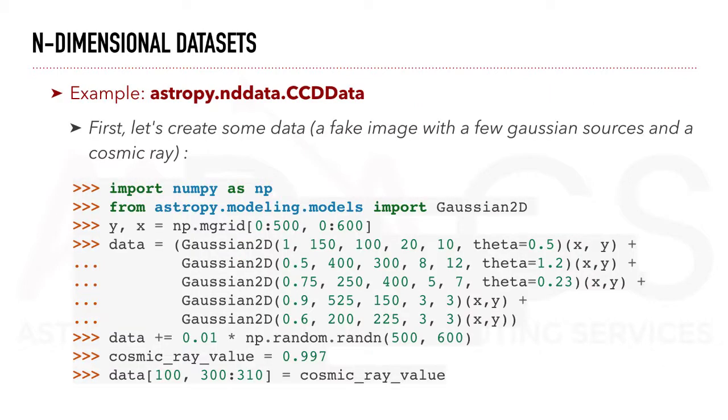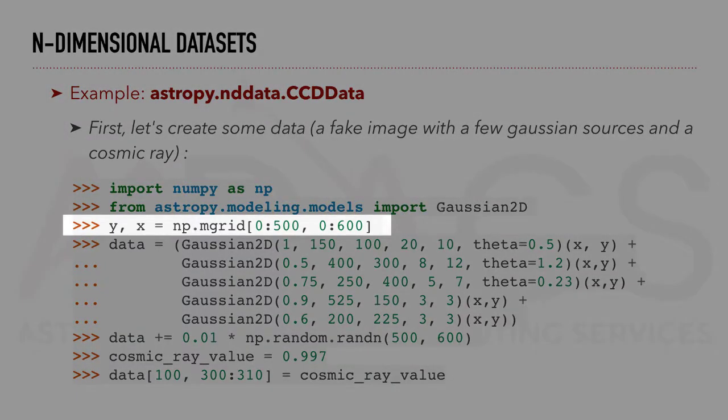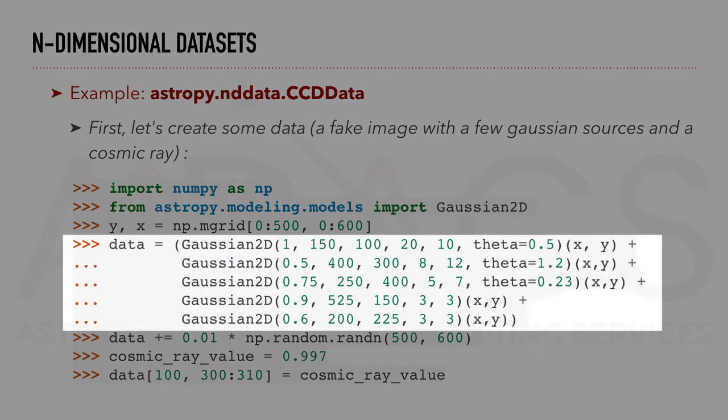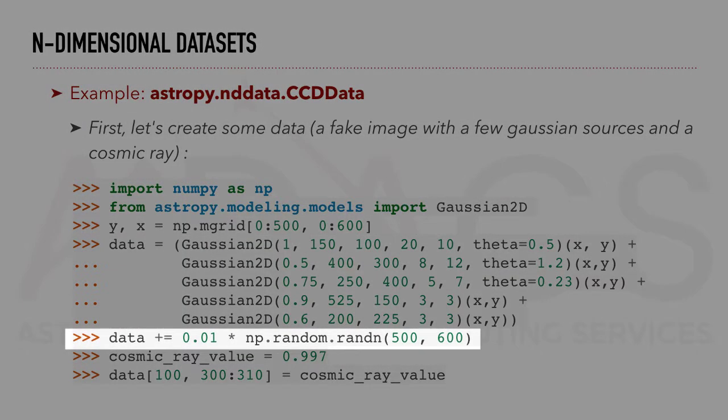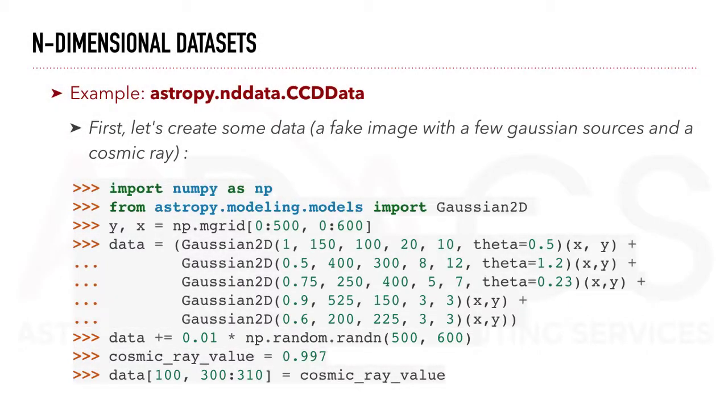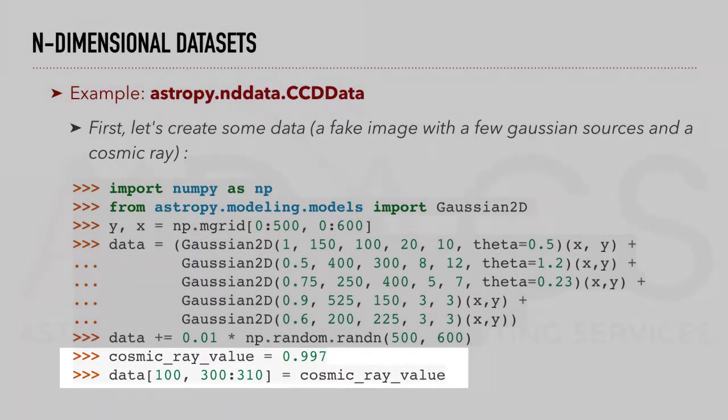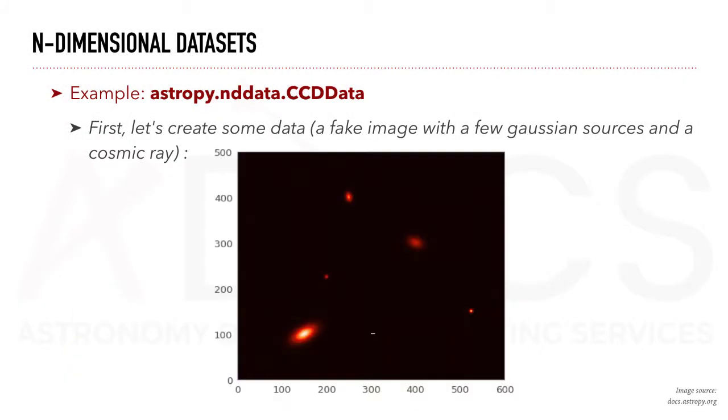To show how to use CCDData, let's create some data. We first create a 2D grid using NumPy. Then, using the Gaussian2D modeling function, we add 5 Gaussian sources and add some random noise. Finally, we will add a cosmic ray. So this is the resulting image that we can work with.